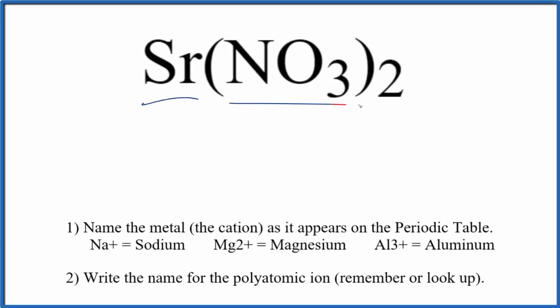Let's write the name for Sr(NO3)2. We have strontium, that's a metal, and then we have a polyatomic ion, a group of nonmetals.